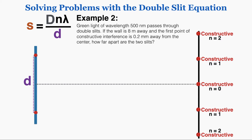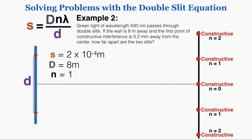In example number two, green light of wavelength 500 nanometers passes through double slits. If the wall is 8 meters away and the first point of constructive interference is 0.2 millimeters from the center, how far apart are the two slits? The distance s is 2 times 10 to the negative 4th meters. D is 8 meters, n equals 1 since it's the first point away from center, and the wavelength is 5 times 10 to the negative 7th meters. We're solving for lowercase d.